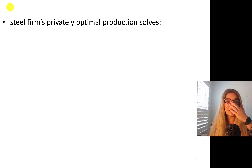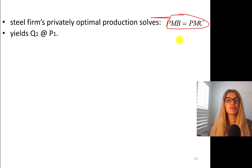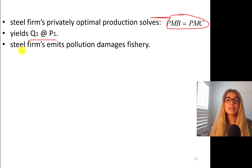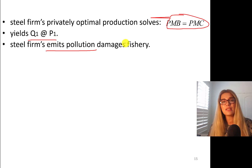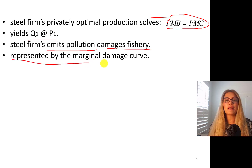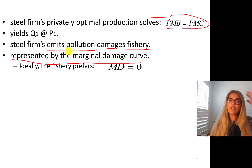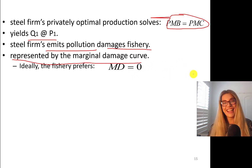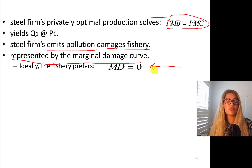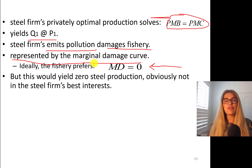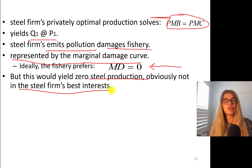In words: the steel firm's privately optimal production sets private marginal benefit equal to private marginal cost, yielding quantity Q1 at price P1. The steel firm emits pollution that damages the fishery, represented by the marginal damage curve. Ideally, as a fisherman, I'd prefer marginal damage to be zero — I don't want to fish in a polluted river. But zero marginal damage means zero steel production, which is not in the best interest of the steel firm. So some pollution could actually be optimal.